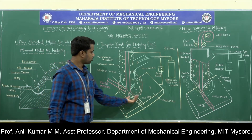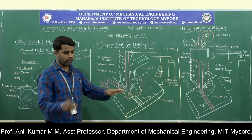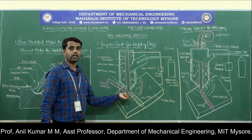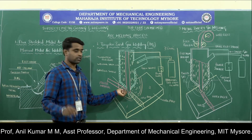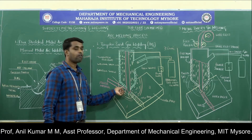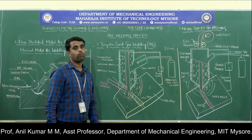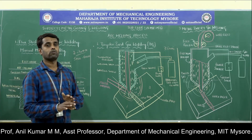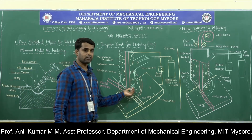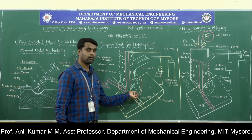The arc temperature is around 3500 degrees centigrade, which is sufficient to melt the edges of the metal pieces. Since a non-consumable electrode is used, a separate filler material is fed into the welding area. The filler material has a lower melting temperature, so due to the high temperature, the edges of the two metal pieces and the filler material all melt. The molten filler material combines with the molten workpiece material, and upon cooling, a strong solid joint is obtained. The inert gases decompose and form a gaseous shield protecting the molten metal from the atmosphere.